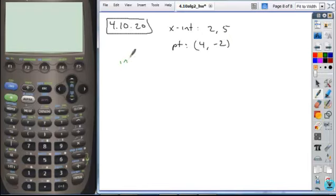So intercept form, if you recall, is y equals, you're still going to have some multiplier a, x minus p times x minus q, where p and q are the intercepts.